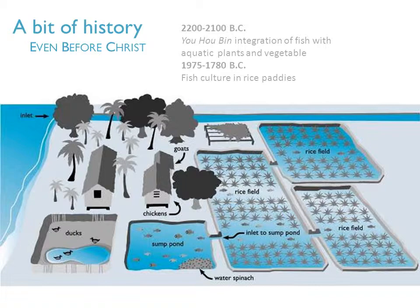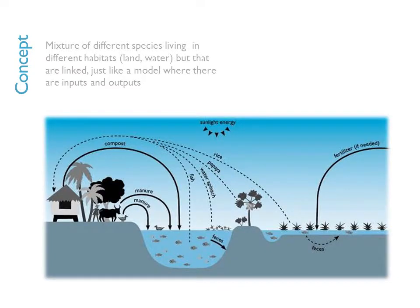When we zoom into this food production system, what we can see is basically an image that is very familiar — it looks like a model with inputs and outputs. We can begin by showing sunlight energy, which feeds the photosynthetic organisms such as these trees. In particular, there is an example of a papaya tree, and also the rice field. These are all crops that are basically food for humans and animals.